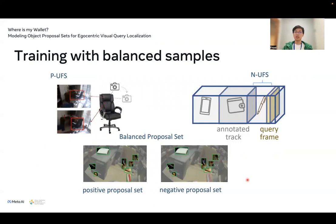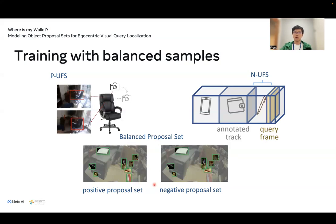To train this conditional detector better, we studied different ways to achieve balanced samples. We propose a positive unlabeled frame sampling approach to collect the visual object from different camera views. We also have negative unlabeled frame sampling to introduce negatives and hard negatives from unlabeled frames. Additionally, we propose collecting a balanced proposal set to ensure balance between positives and negatives by randomly masking the foreground object, as shown in the picture below.